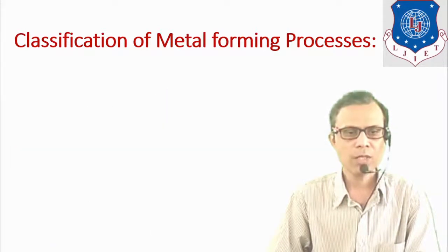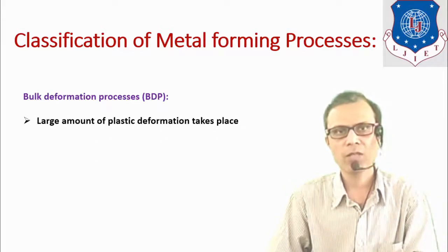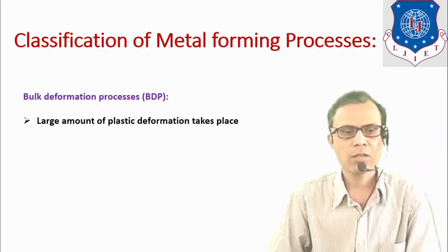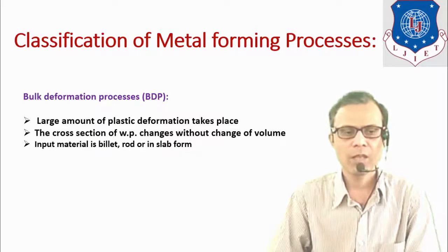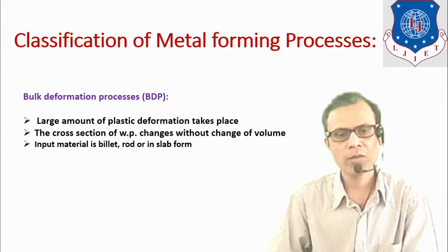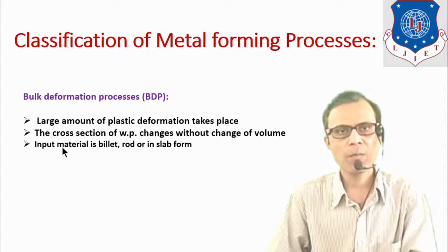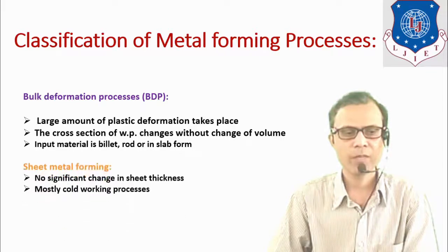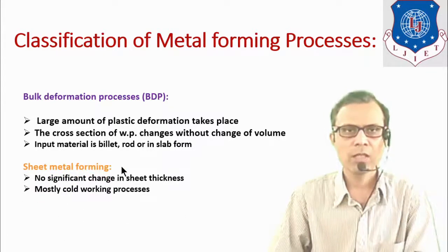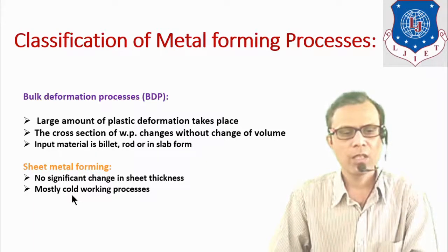In the case of bulk deformation processes, massive plastic deformation takes place in the crystalline structure of the material. The cross section of the workpiece changes or is reduced without a change in volume. Input material may be in the form of ingot, bloom, or billet. In the case of sheet metal forming processes, there is no significant change in the thickness of the sheet, and these processes are mostly cold working processes.